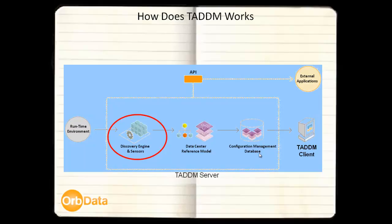We then need the access list — access credentials to standard and secure protocols such as SNMP, SSH, WMI, JMX, SQL, etc. — that allows us to discover the components within the environment. And finally, we need the schedule. This defines how often you want to run the discovery in order to keep the maps accurate. You can also schedule the discovery to run on demand, and the discovery can also be event driven.